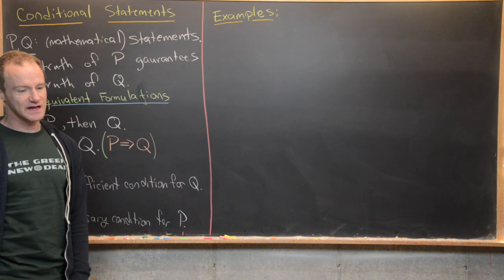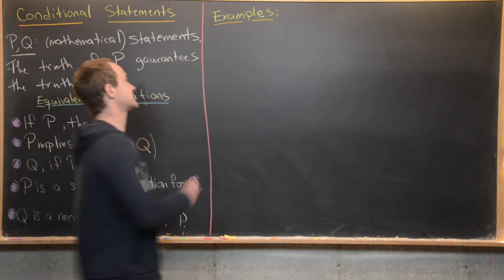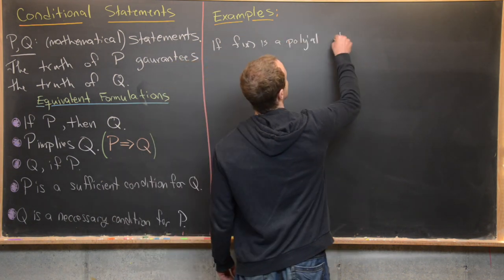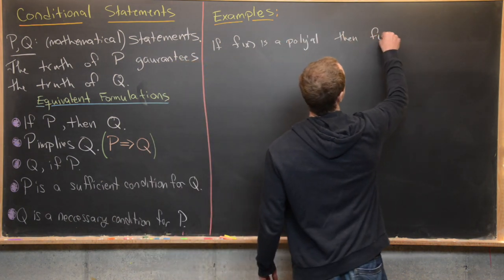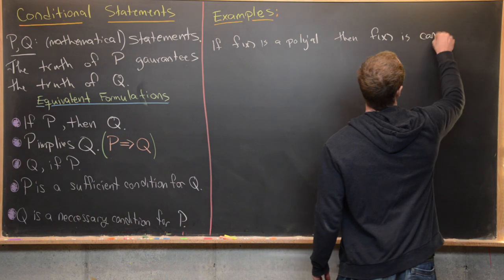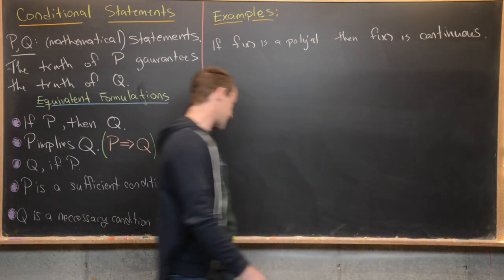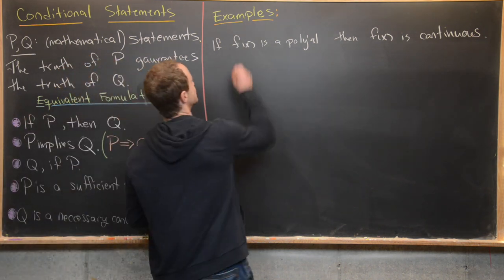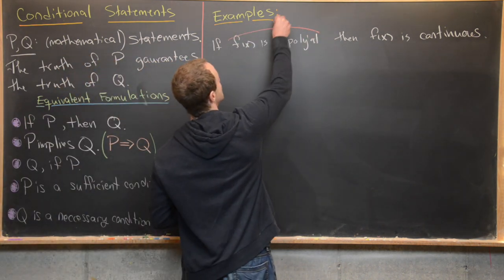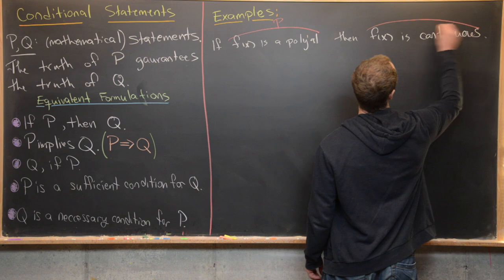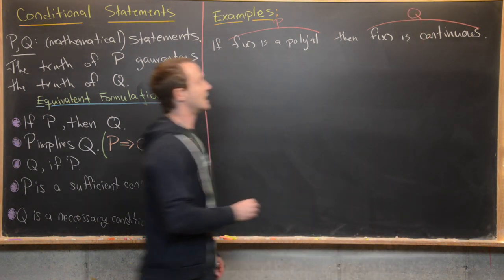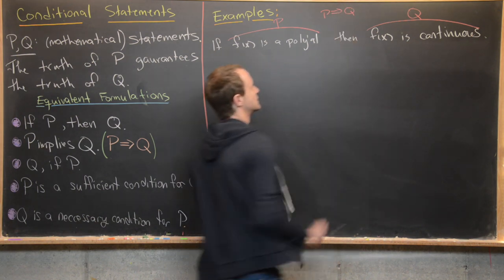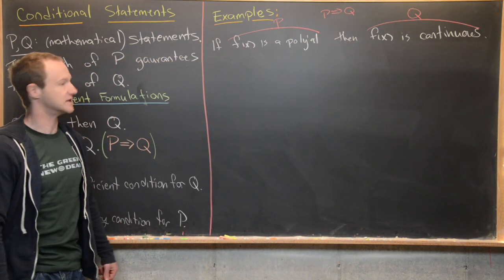The first example: if f(x) is a polynomial, then f(x) is continuous. In this case, statement P is 'f(x) is a polynomial,' and statement Q is 'f(x) is continuous.' So here we have P implies Q. It's well known that every polynomial is continuous.